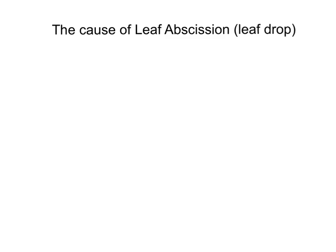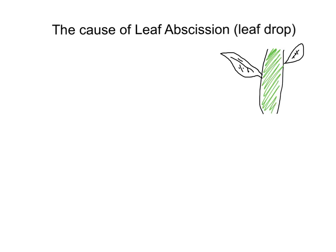Abscission is also called leaf drop. What we're going to do is just draw a very quick sketch of the area of the plant that we're concerned with. We've got a bit of a stem, the leaf in place with some veins, and the part that we are concerned with is the junction between the leaf and the stem. We're going to talk through what's actually going on at that particular part.